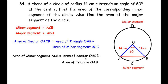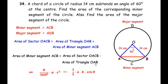Now let us write down the respective formulae. Area of sector OACB is given by θ/360° × πr², where θ represents the central angle. In this case θ = 60°, π = 22/7, and r = 14. The area of triangle OAB is given by ½ × a × b × sin θ, where a and b represent the radii of the circle, both equal to 14.